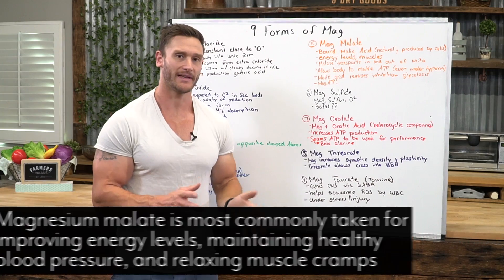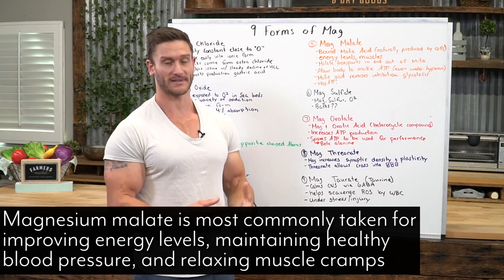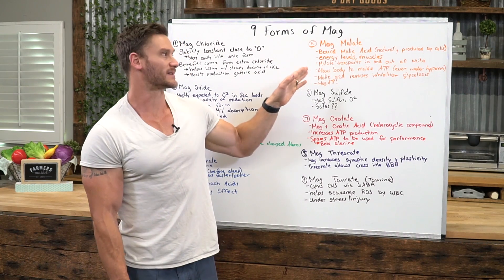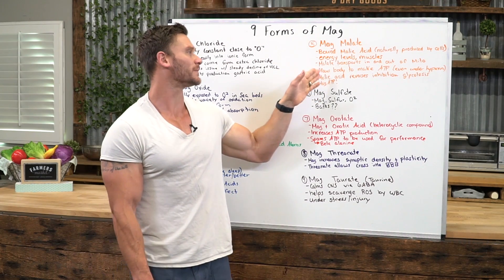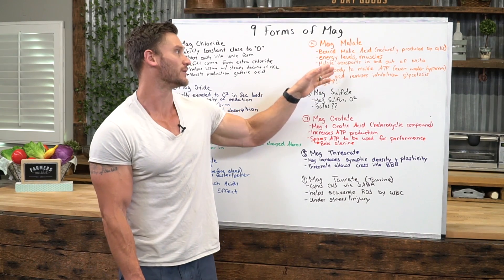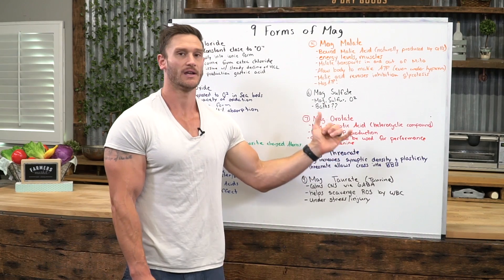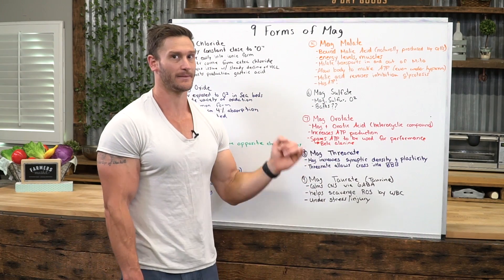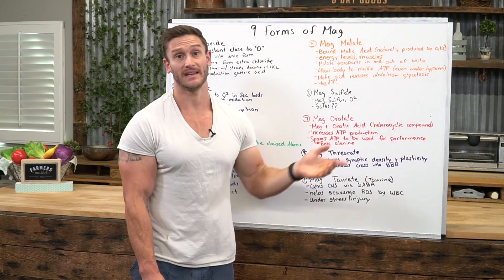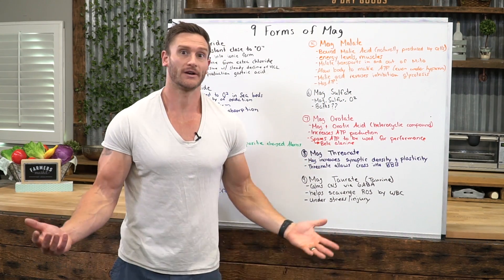A lot of people will take mag malate or dimagnesium malate to help with muscle cramps — that's where it's really widely known and very powerful. The reason this works specifically in the muscle cell is it helps transport magnesium in and out of the mitochondria. The malate that the magnesium is bound to helps the magnesium transport in and out of the mitochondria, which we need because it allows the body to make ATP. ATP is our energy — without it, we don't have life.